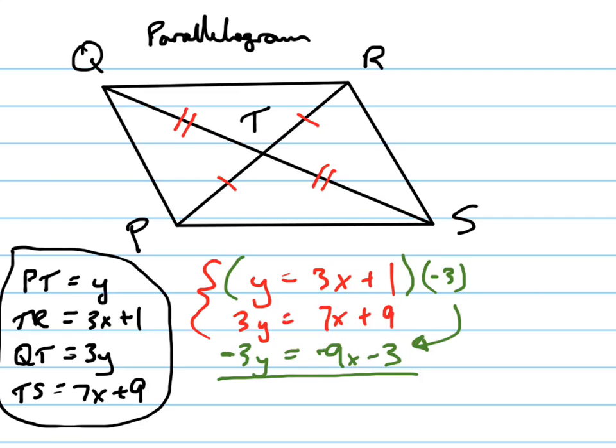That gives me negative 3y equals negative 9x minus 3. And now when I add these straight down, I'll go ahead and erase, get rid of that so you don't get confused.